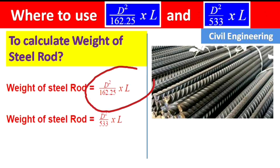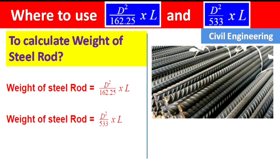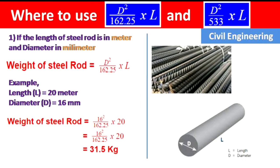The two formulas are: d² / 162.25 × L, and d² / 533 × L. Both are correct. Let us see where each formula should be used.